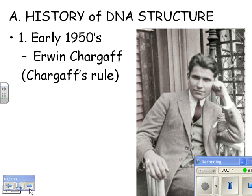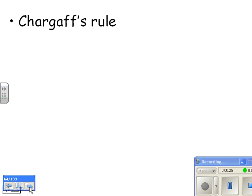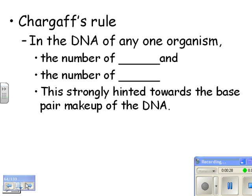This was in the early 1950s, and this is Erwin Chargaff. His important contribution is known as Chargaff's Rule. Here's what he said: in the DNA of any one organism — in a human, for example — the number of G's equals the number of C's. So the number of guanines in your DNA will equal the number of cytosines. And also, the number of A's will equal T's — the number of adenines you have will equal the number of thymines. This strongly hinted toward the base pair makeup of DNA.